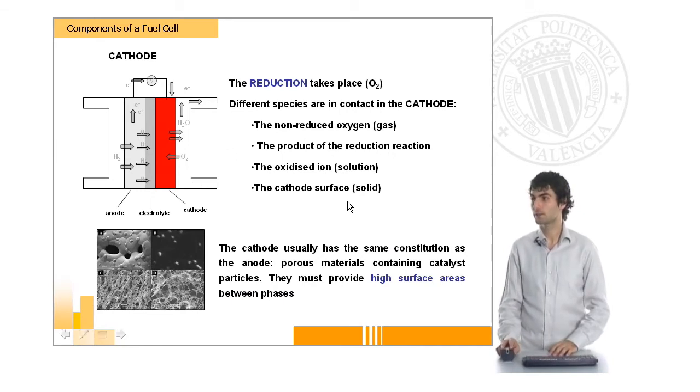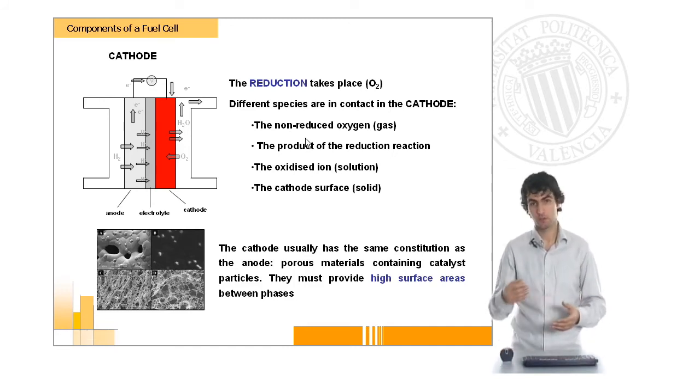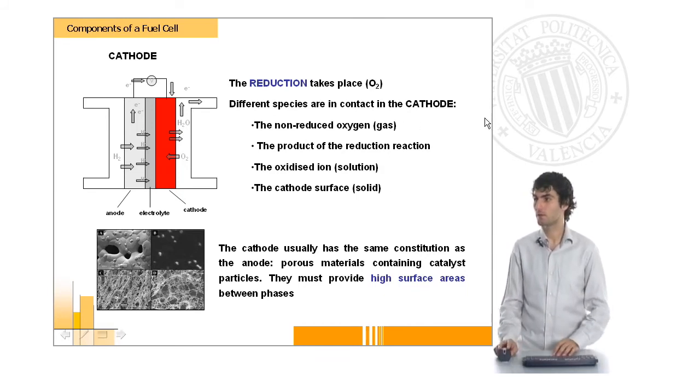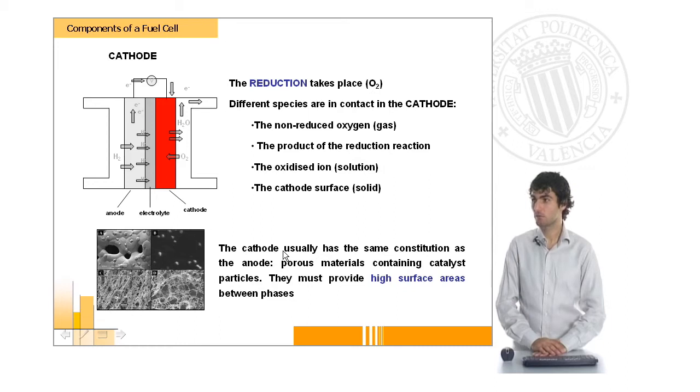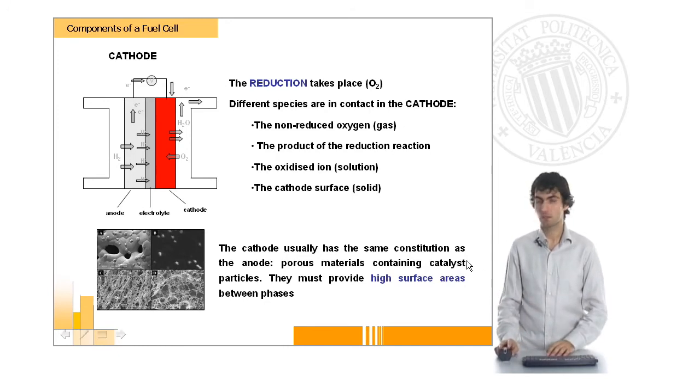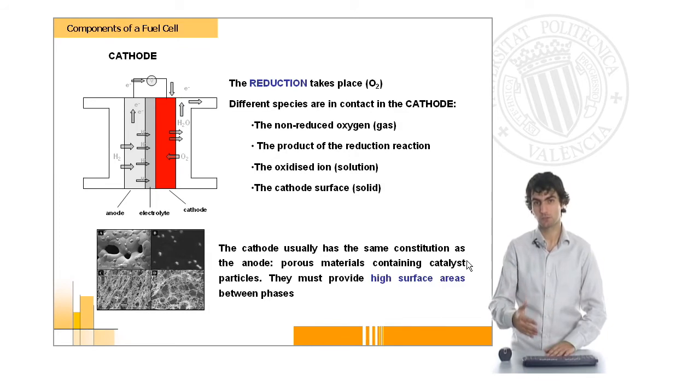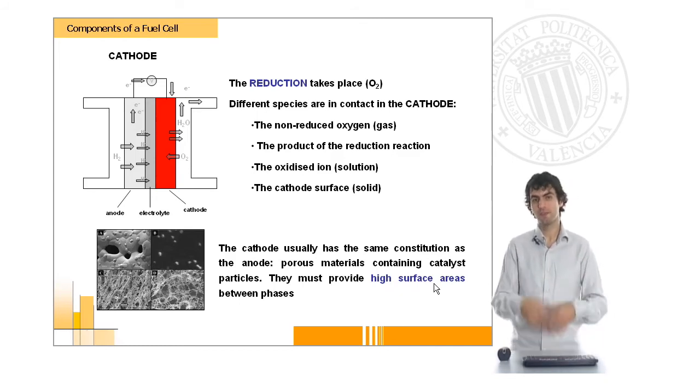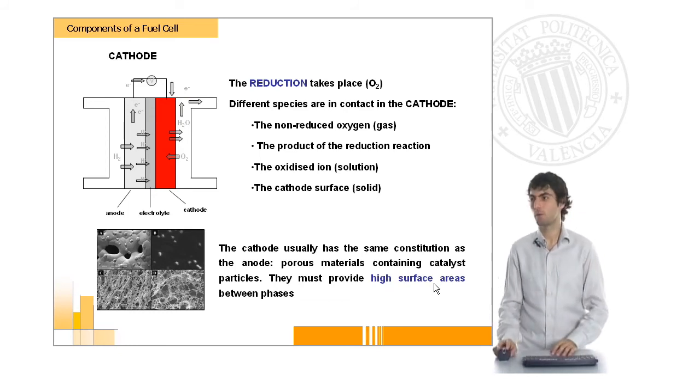The cathode is usually formed of the same material as the anode. It also has a very complex phase equilibrium because you can find the non-reduced oxygen coming through, also the water that might be produced or the other product of the reactions, and also the cathode surface which is going to be solid. Similarly to the anode, the cathode will be formed probably by carbon cloth, graphite, or other materials which help you obtain these electrons and use them when you want, but also must contain some catalyst particles so that the electrochemical reactions can indeed happen. Again it's very important that these porous materials have very high surface-to-volume ratios because we will be able to have very reacting surface in a very small volume of electrodes.